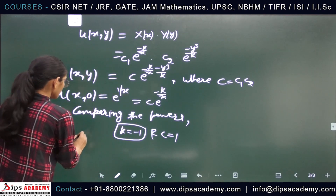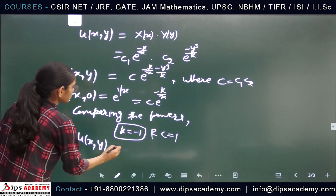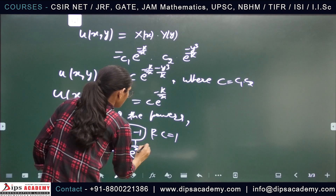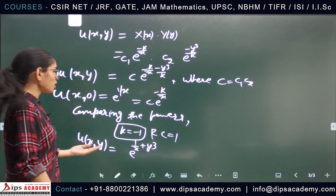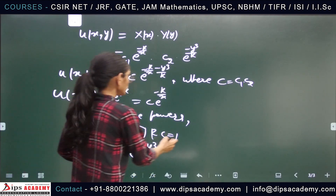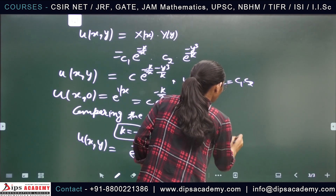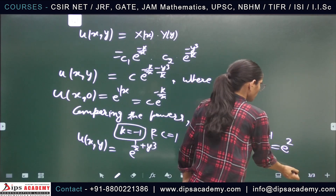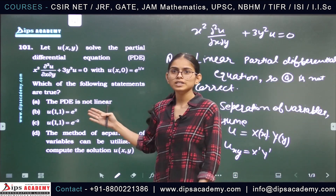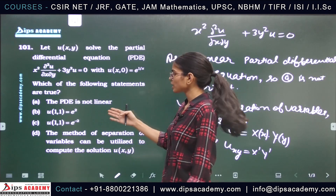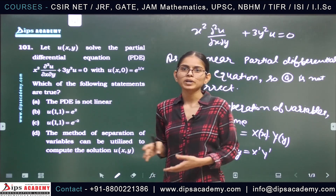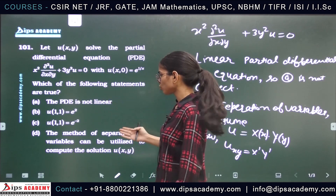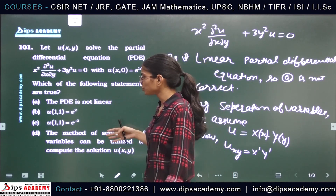Putting these values in the solution, u(x, y) equals e raised to the power (1 by x plus y cubed). This is our u(x, y). Now finding the value of u at (1, 1): u(1, 1) equals e raised to the power (1 plus 1) that is e raised to the power 2. In the question there are two options, e raised to the power 2 and e raised to the power minus 2, so option B is correct and option C is wrong. As we used the separation of variables method, option D is also correct. The answer is B and D.